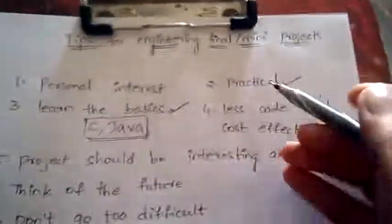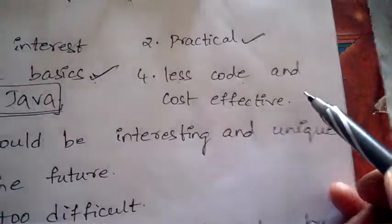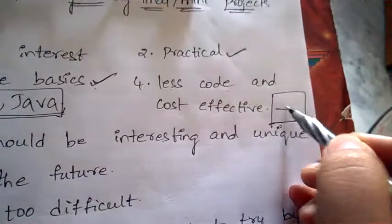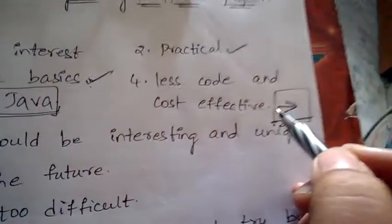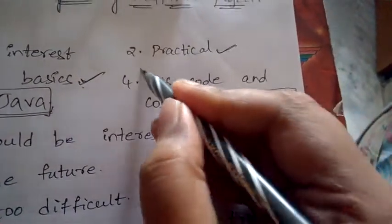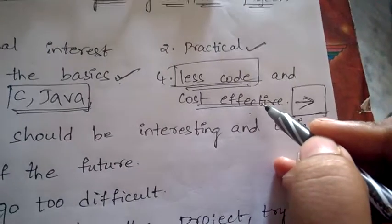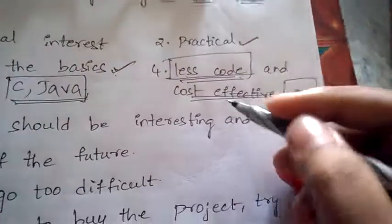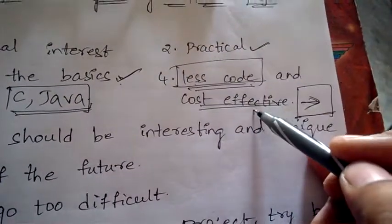Next is less code and cost effective. When you are in final year you are just preparing a project for marks, but the next stage is getting a job. Once you go into a job, the company will look for applications or projects that have less code and are cost effective. Less code because storage space will be saved; cost effective because it will save the company money.